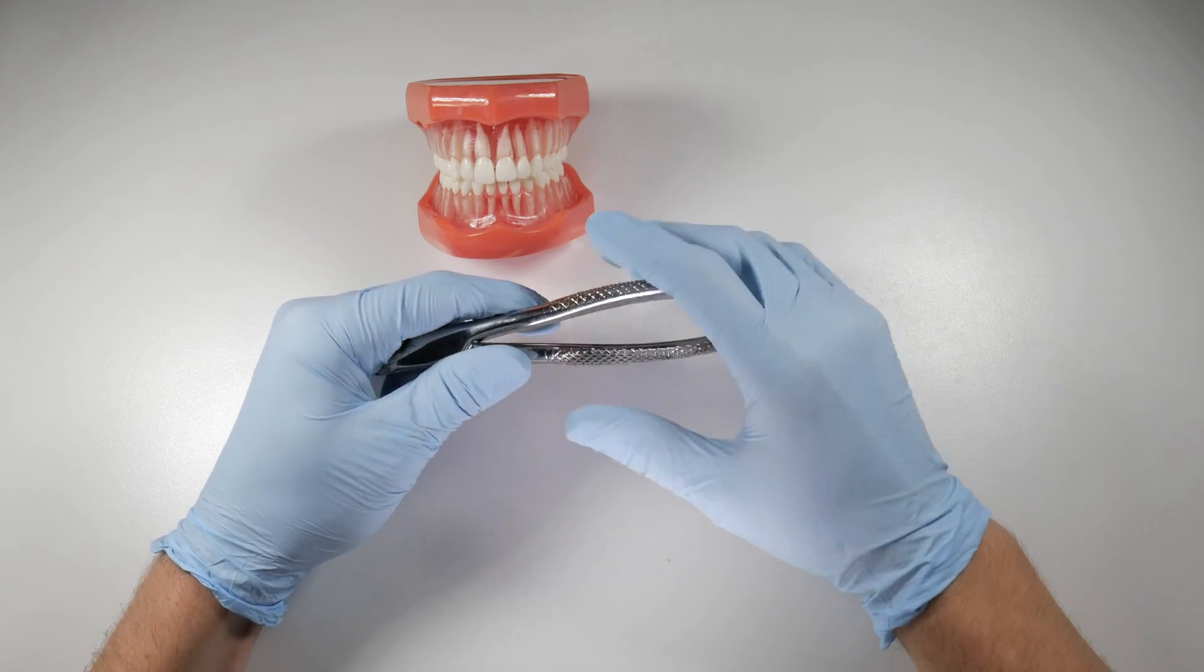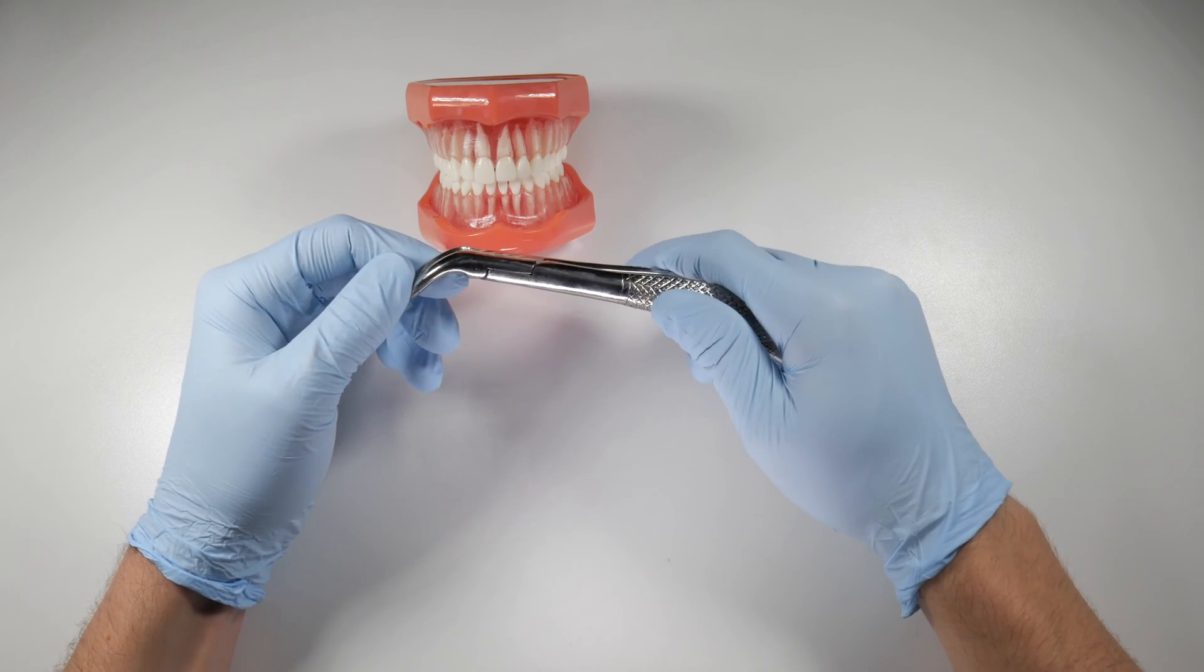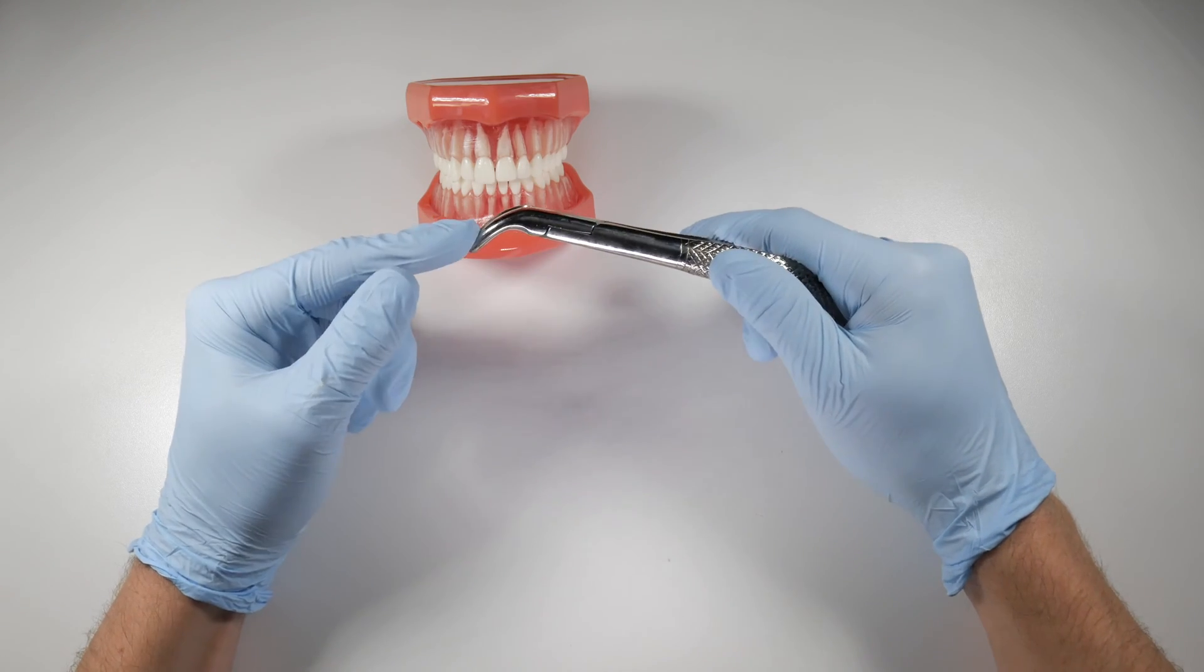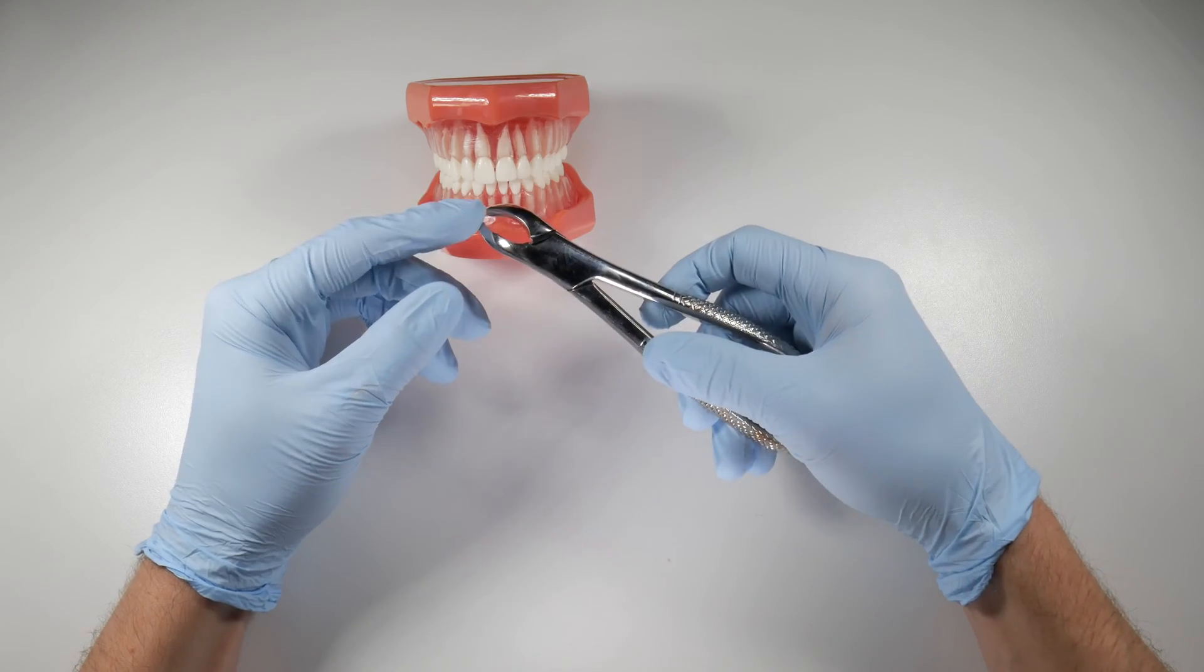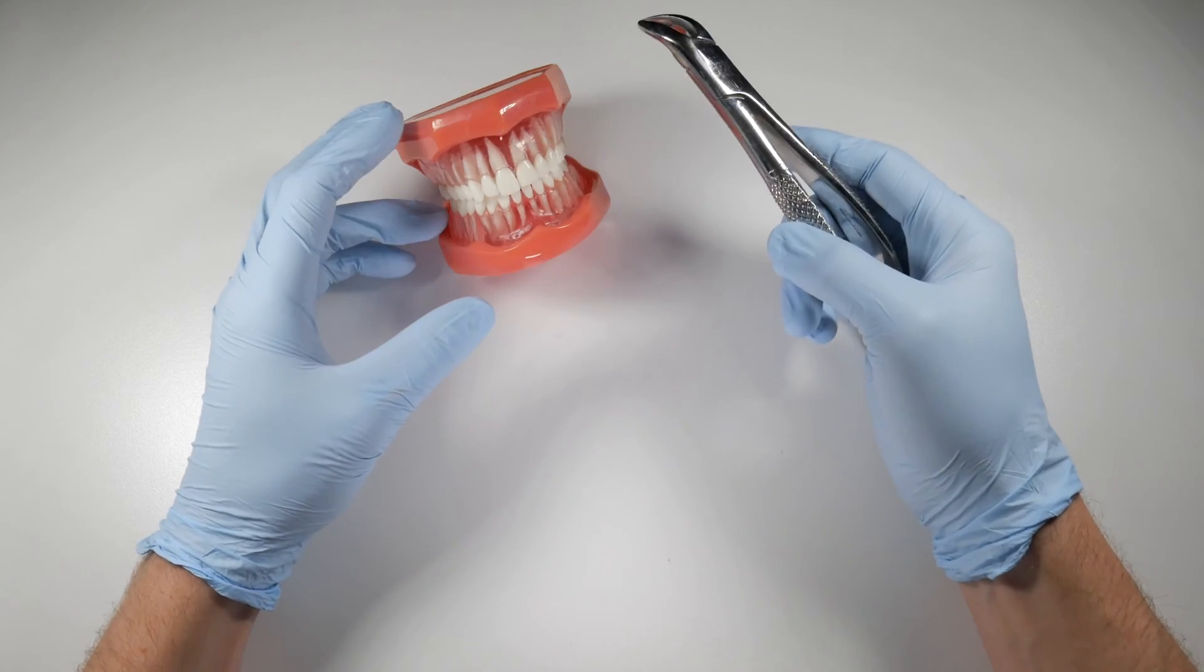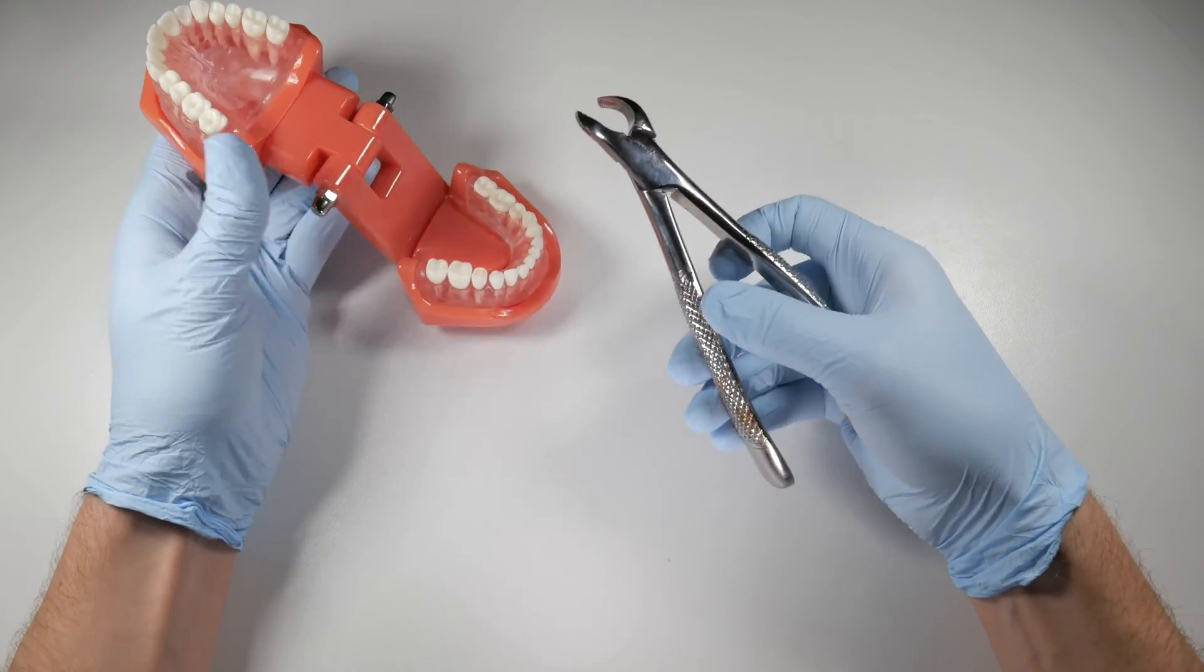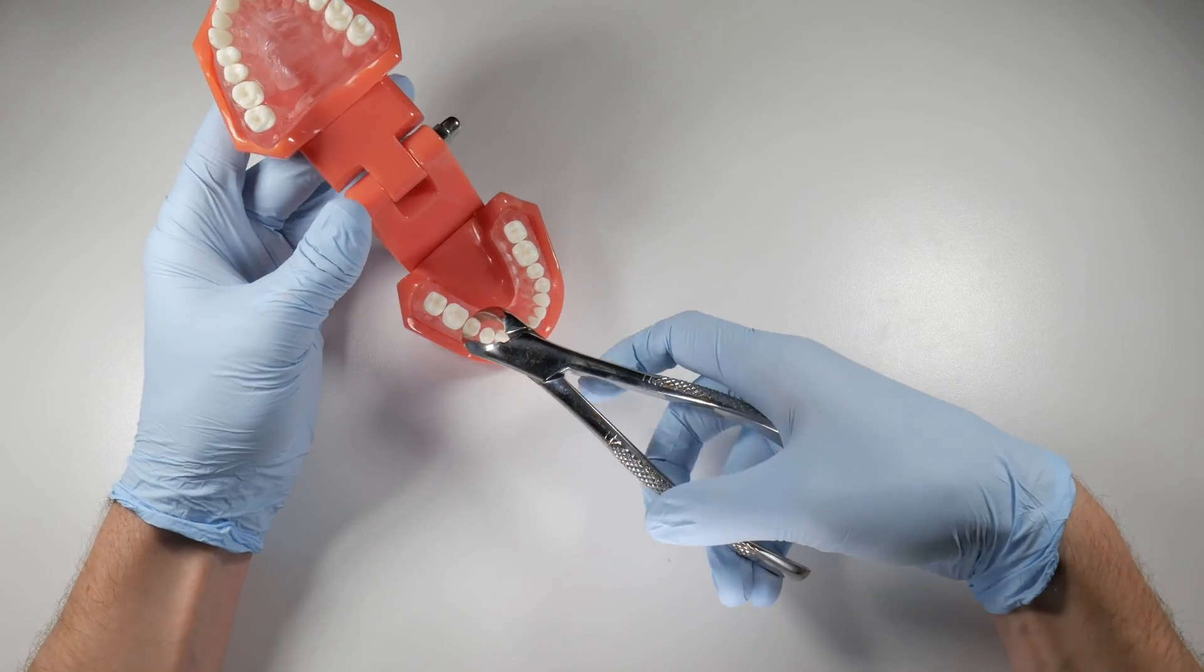Technique becomes very important, as it is for all of us, but maybe more so for you when you're taking teeth out. One thing about forceps is there's kind of two ways to hold them. I'm going to show you something that might give you a little bit of an advantage when you're taking teeth out. So this here, we've got our standard universal lower forcep. Let's say we're going to take out this lower right second premolar.